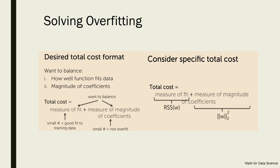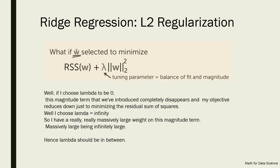The total cost is: RSS (measure of fit on training data) plus the magnitude of the coefficients (to prevent overfitting). So total cost = RSS + ||w||². One method of solving overfitting is ridge regression, also known as L2 regression. The RSS term stays the same; we play with the coefficients. We introduce a new parameter lambda — the tuning parameter — which balances fit versus magnitude. If lambda is infinity, the total term blows up; if lambda is approximately zero, the total term equals RSS. So lambda must be chosen in between.